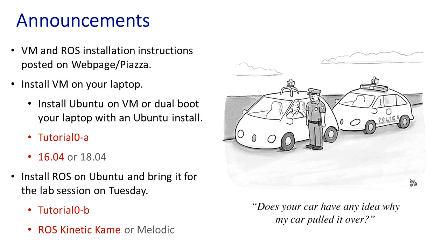If you are comfortable dual booting your machine, you can do that — it's faster and you won't run into virtual machine lagging problems. Once you have Ubuntu, there's another set of instructions taken from the ROS wiki to install ROS corresponding to your Ubuntu distribution. If you have 16.04, install ROS Kinetic; if you have 18.04, install ROS Melodic. You have to do this so we can get into the lab sessions of this course.